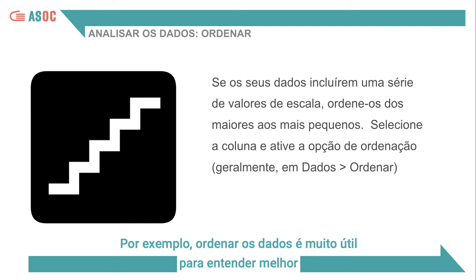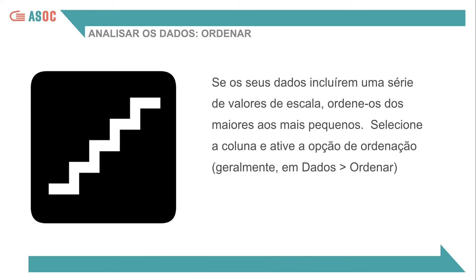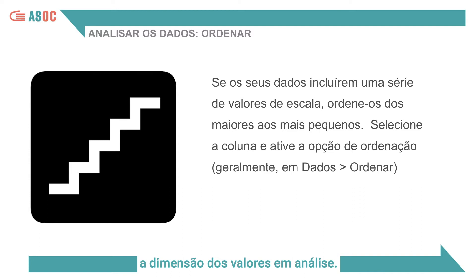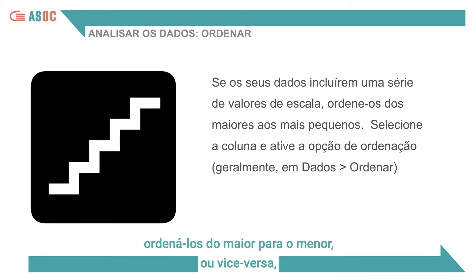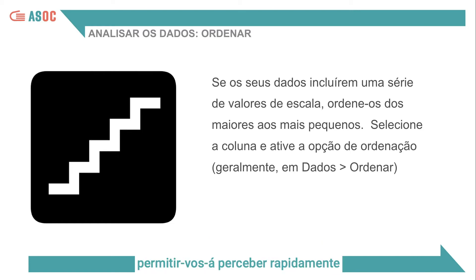For example, sorting data is very useful for better understanding the size of the values being analysed. If your data include a series of values of scale, for example the number of employed people per region, sorting them from the largest to the smallest or vice versa will allow you to quickly understand where employment rates are higher or lower.